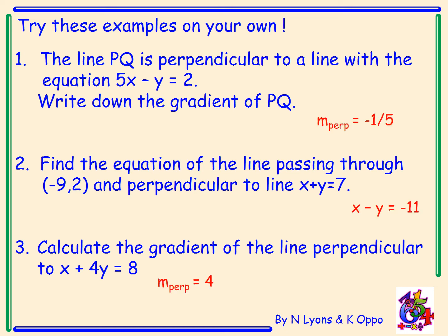Question 1. The perpendicular gradient equals minus 1 over 5, minus a fifth. Question 2. The equation of the line passing through the point minus 9, 2 and perpendicular to line X plus Y equals 7 is the line X minus Y equals negative 11. Question 3. The gradient perpendicular to the line X plus 4Y equals 8 is the gradient equal to 4. So how did you get on? Did you get them all correct?